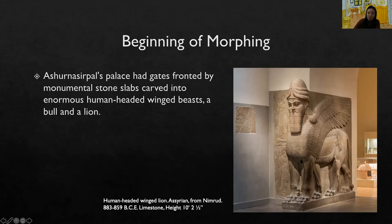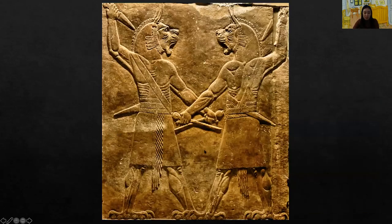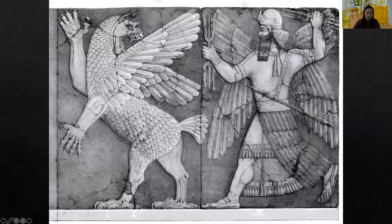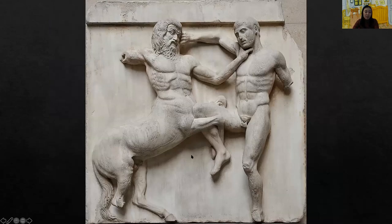For example, this Assyrian artist created an enormous human-headed and winged beast. Here's another example with a wild beast head, human body, and bird's feet. This more aggressive morphing shows a beast with bird wings, feet, and feathers on its body. And this is a Greek sculpture — look at the left figure, which is half human and half horse.